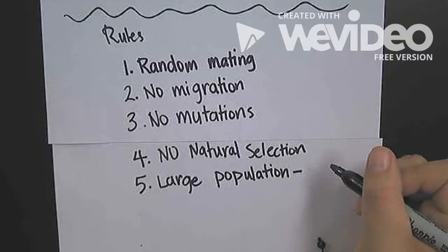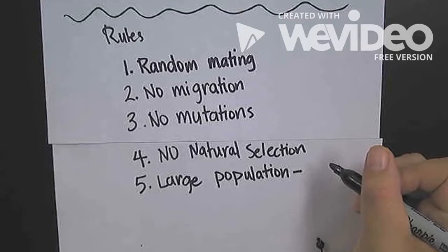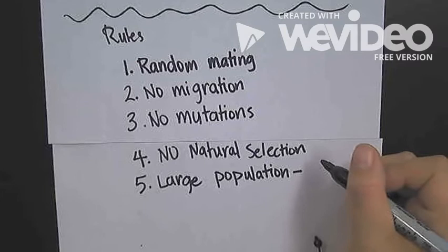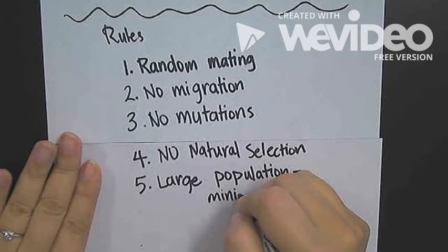That's because of the randomness of the mating and the simulation that we did. With large population, what that does is minimize genetic drift.